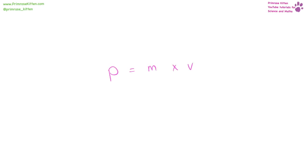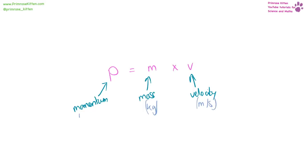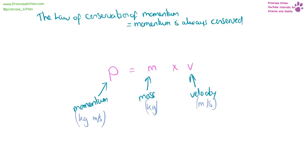Momentum equals mass times velocity. Mass in kilograms, velocity in meters per second, and momentum in kilogram meters per second — note there is a space, not a fraction line. The law of conservation of momentum states that momentum is always conserved: momentum before a collision equals momentum afterwards.